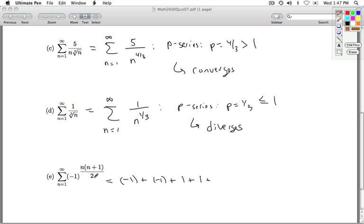Plug in 5. 5 times 6 over 2 is 15. Plug in 6. 6 times 7 over 2 is 21. Plug in 8. 8 times 9 over 2 is 36. So we get this pattern.